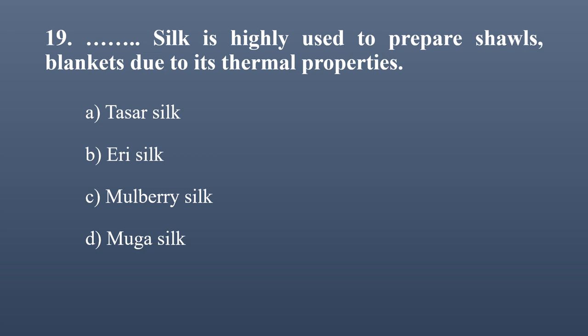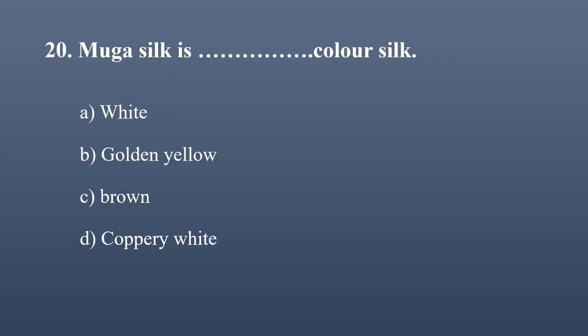Which silk is highly used to prepare shawls and blankets due to its thermal properties? Options: Tassar silk, Eri silk, mulberry silk, Muga silk. The correct option is Eri silk — due to its thermal properties it is cool in warm environments and warm in cool environments. That is why Eri silk is used to prepare shawls and blankets.